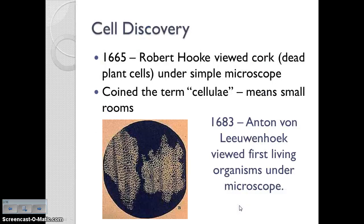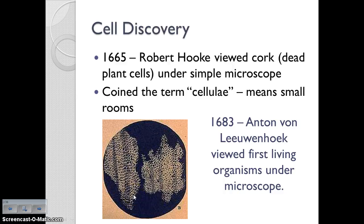Before we talk about the importance of cell structures, we have to talk about how we know this. We know this because of the work of several scientists. Let's start with Robert Hooke in 1665. He viewed a piece of cork, which are dead plant cells, underneath a very simple microscope. This is about what he saw, because this is a drawing from one of his notebooks. He basically saw what he thought looked like little jail cells, or like the cells that monks lived in at the time. So he gave them the term celluli, which literally means small rooms.